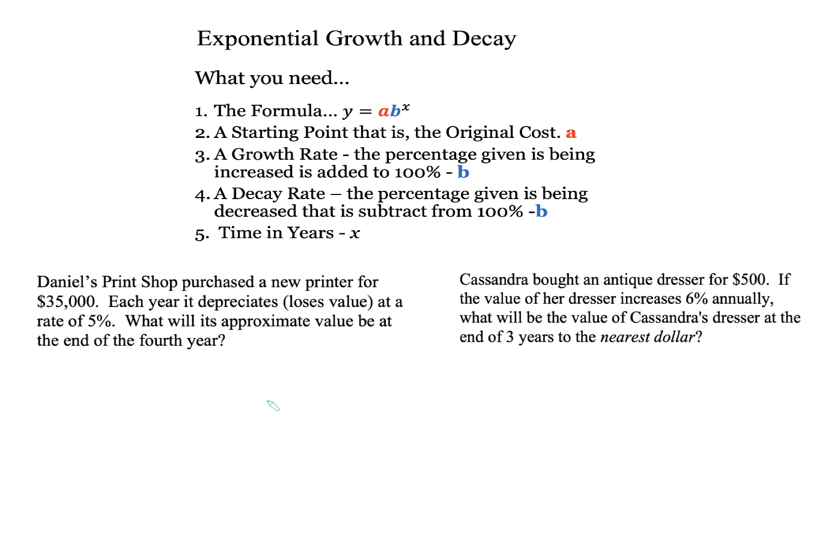Now, when you have exponential growth and decay, what do you need? You need five things. The first thing, which is most important, you need the formula. So your first step is to write your formula, and your formula is y equals a b raised to the x. That's your formula. And it's pretty easy, a b, and x is all the way at the end of the alphabet, and x is your exponent. Second, from reading your word problem, you have to know who is the starting point. The starting point is your original cost, and that is your a.